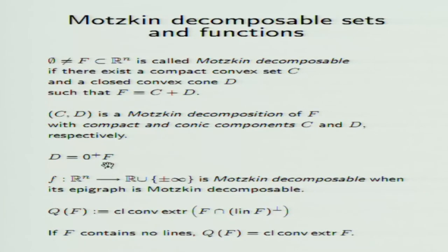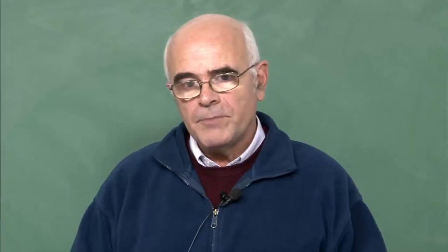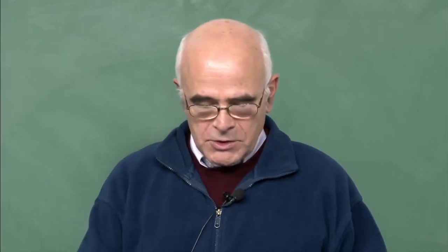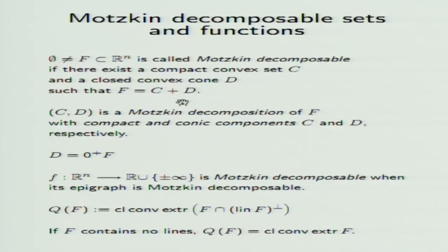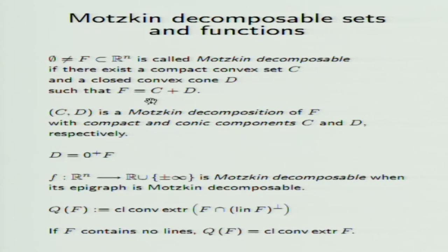This is a large class of closed convex sets. It includes all convex polyhedra, but it also includes all compact convex sets because we can take D equal to the singleton of zero. It also includes all closed convex cones because we can take C equal to the singleton of zero. Then it is a large class but it does not exhaust the whole class of closed convex sets.